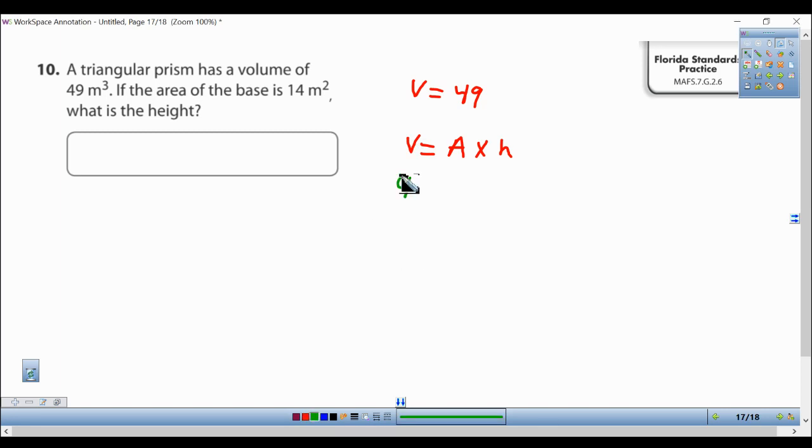So my volume is 49 is equal to my area. Area is said to be 14 times it by my height.